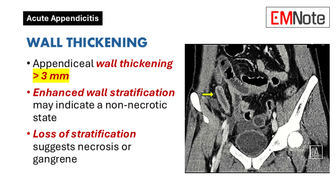Wall thickening: The appendiceal wall typically thickens to more than 3 mm in cases of appendicitis. Enhanced wall stratification may indicate a non-necrotic state, while loss of this stratification suggests necrosis or gangrene.